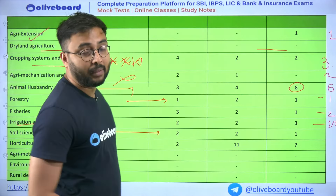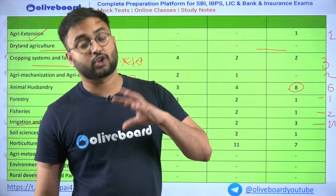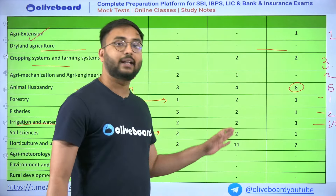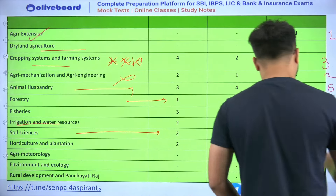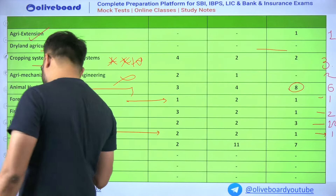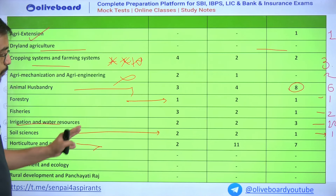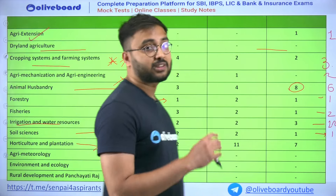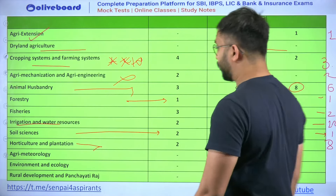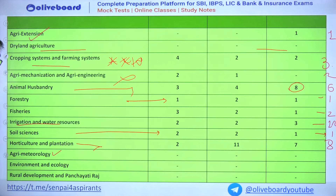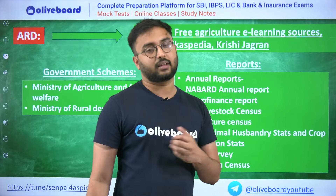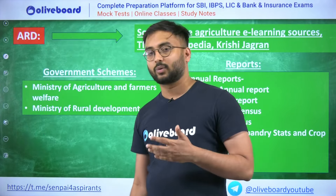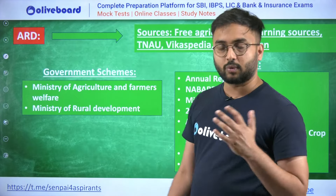Soil Sciences covers properties of soil mainly — texture, structure, and composition. Classification of soil, soil orders, and their properties can also be asked. Last year only one question was asked, but 2 to 3 questions can come from this chapter. Horticulture and Plantation is one of the most important chapters — sometimes 7 to 11 marks. In 2023, almost 8 questions were asked. Meteorology and environment ecology chapters are easier with no questions so far. Rural Development and Panchayati Raj Institution questions are less likely but possible.